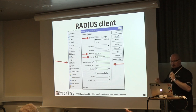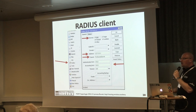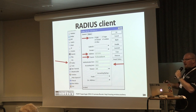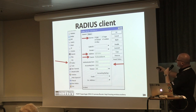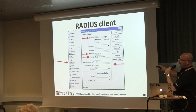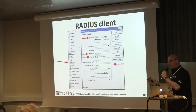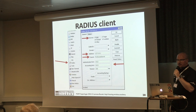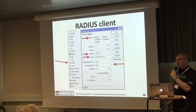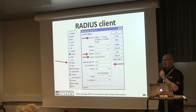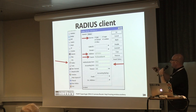You can add different RADIUS servers for each service you want to authenticate, or you can add more than one server for redundant RADIUS servers. For each RADIUS client you can specify the services you want to use with that server for authentication. Usually a single RADIUS server is used for a single service — having multiple services on one is unusual but possible.